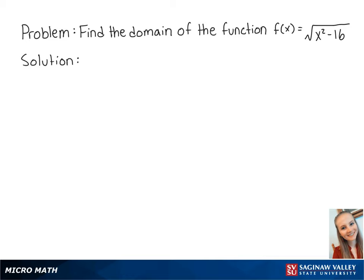For this problem, we want to find the domain of the function f(x) equals the square root of x squared minus 16. First, we want to set up the equation x squared minus 16 is greater than or equal to 0. This is because the domain is when there is not a negative number underneath the square root.